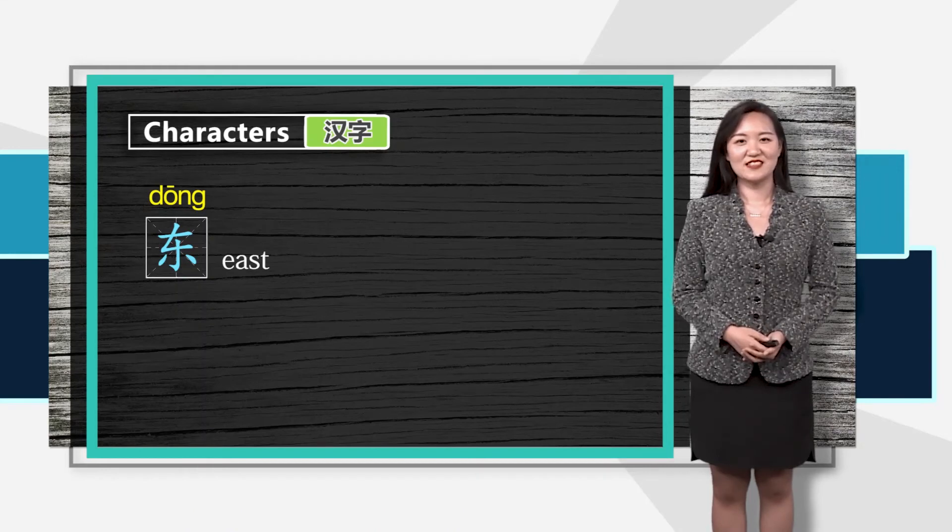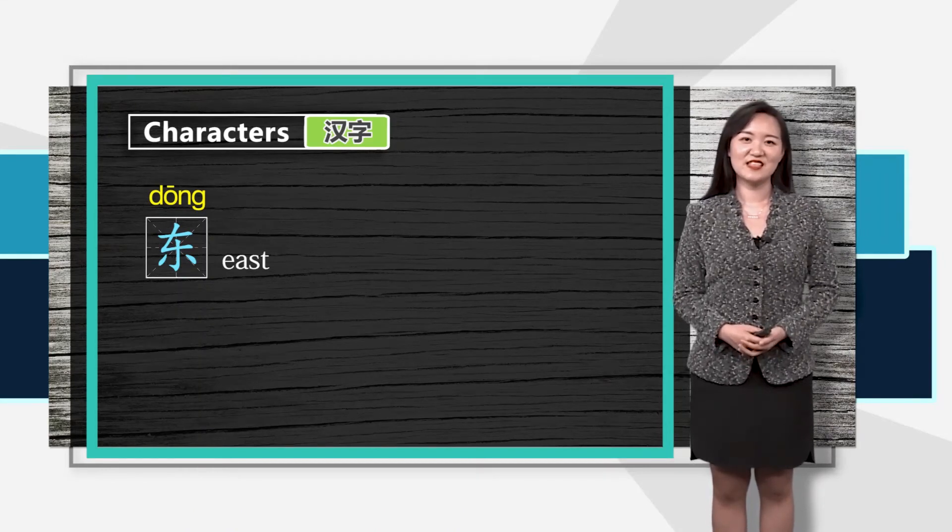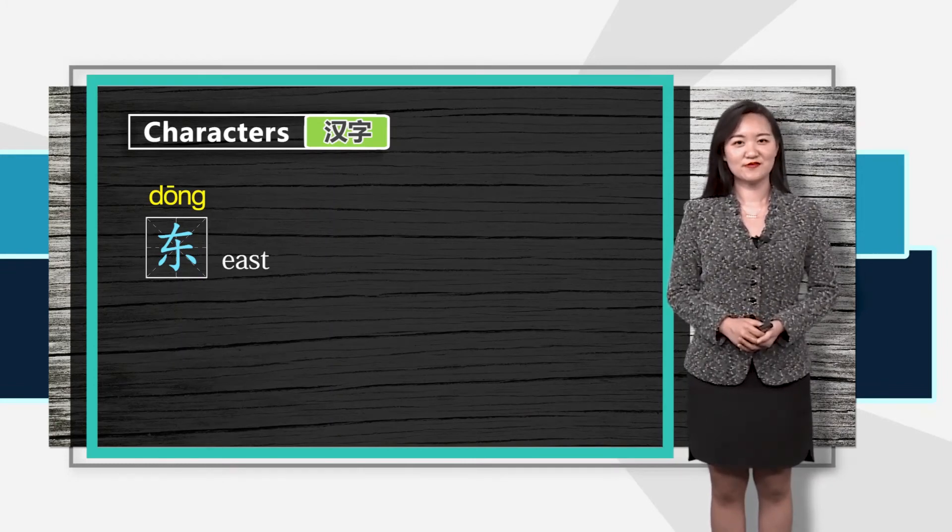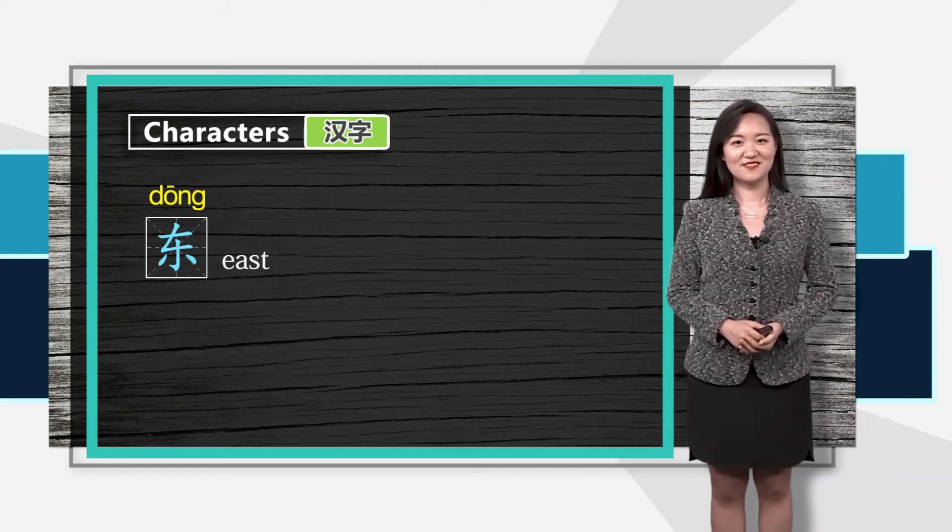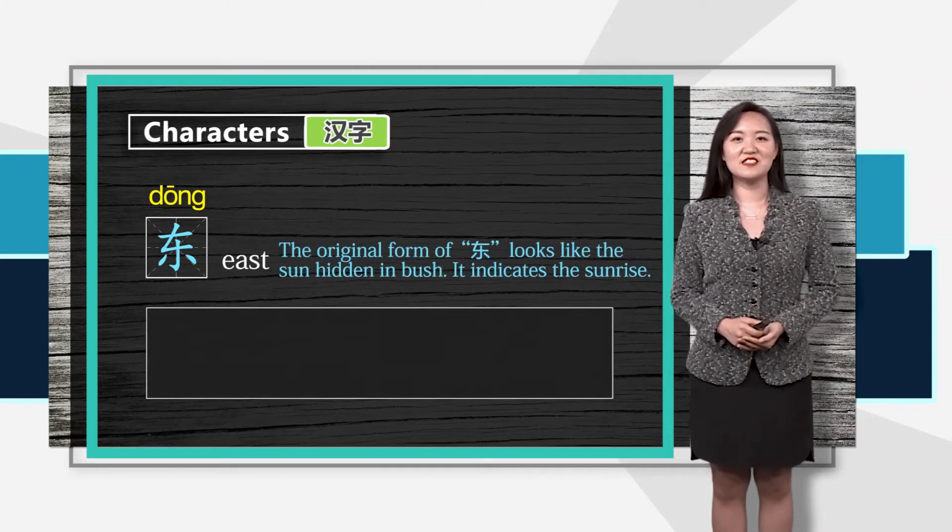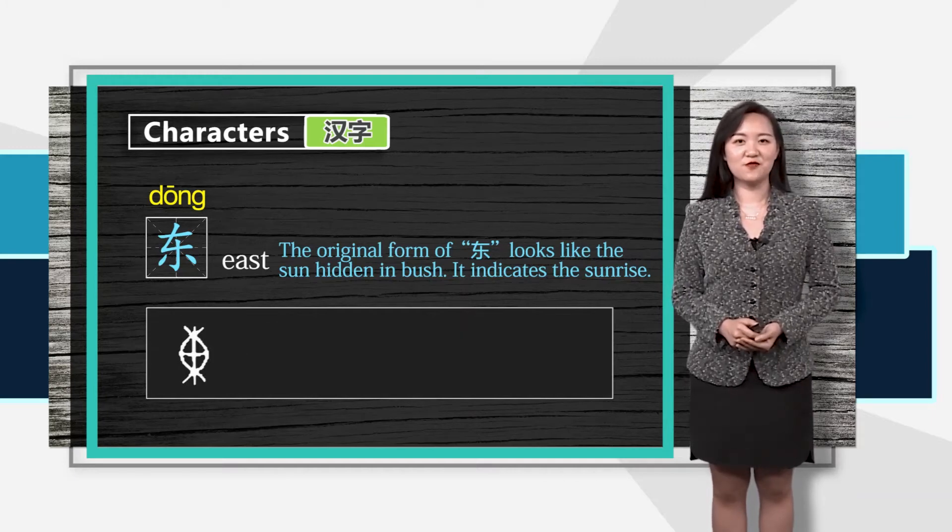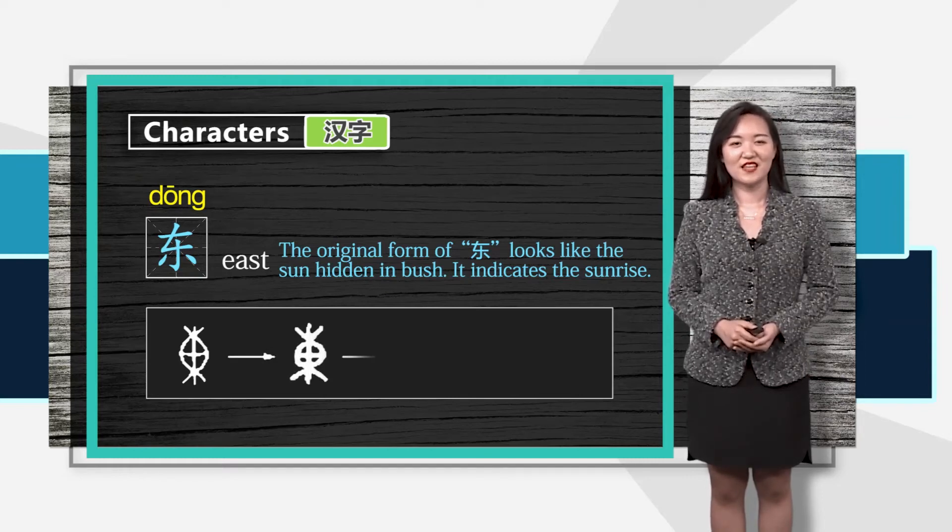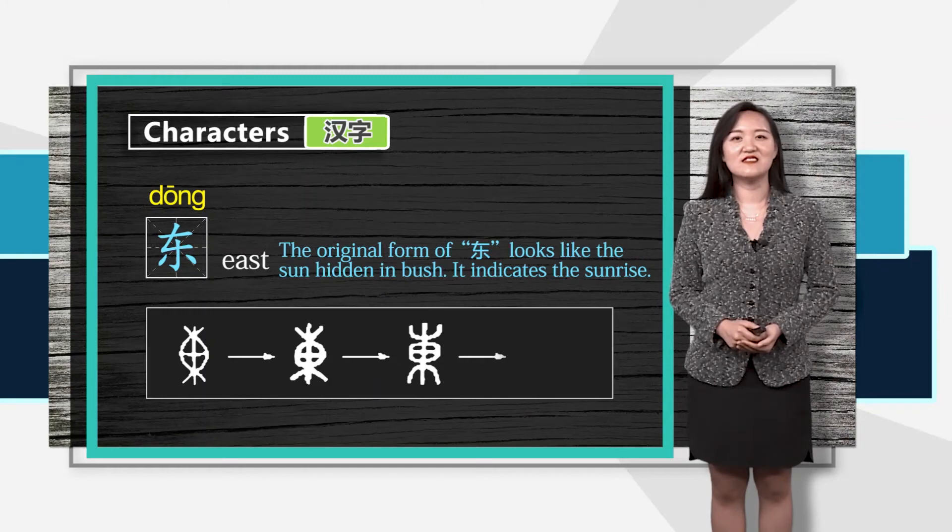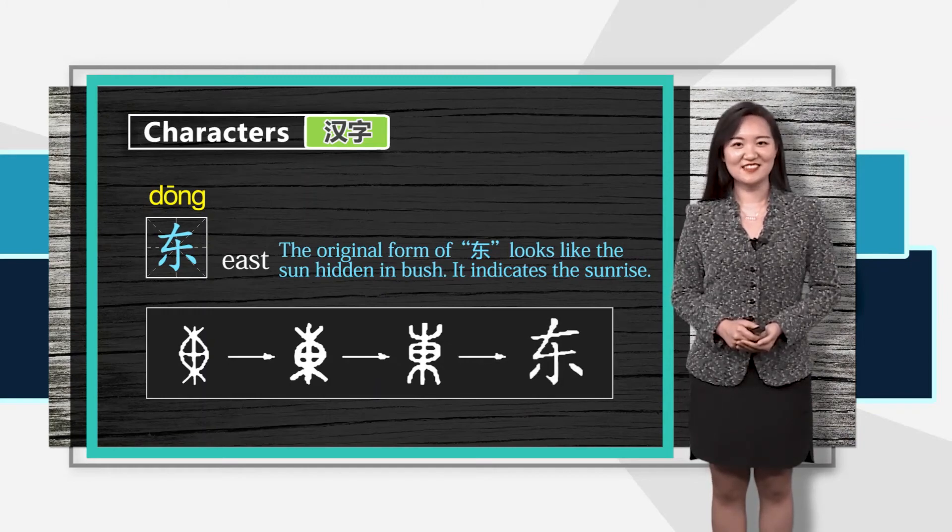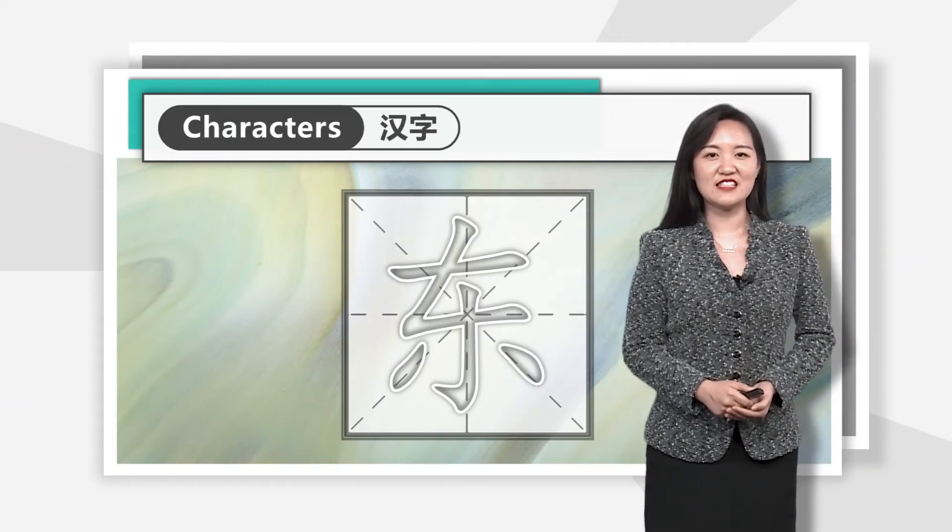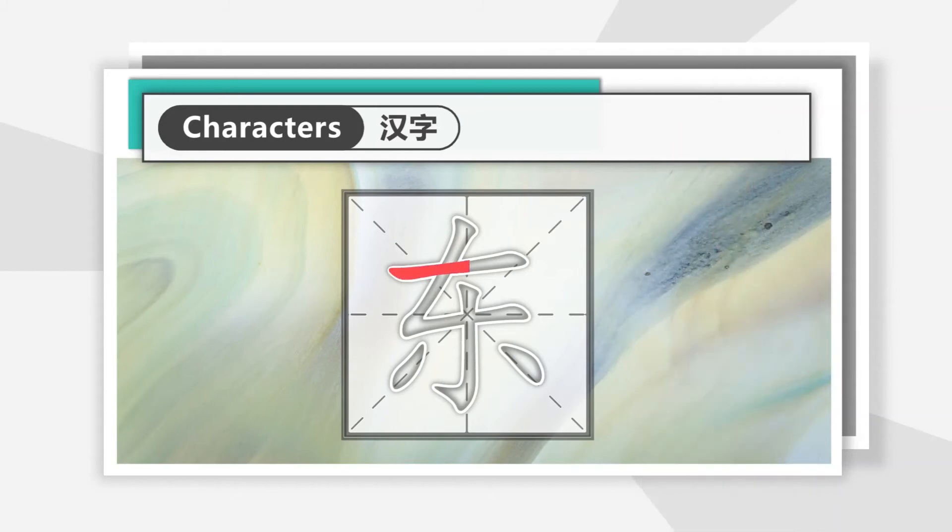Now we know more strokes. Do you still remember the example characters? Let's have a look at them together. 东, east. 东 is where the sun rises. The original form of 东 is the sun hidden in bush, indicating the sunrise. Therefore, this character means the direction of sunrise, east. Let's write it down together and pay attention to the stroke order.